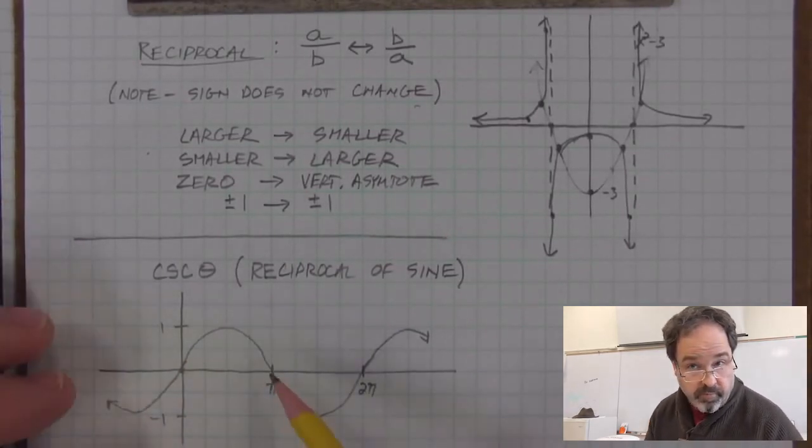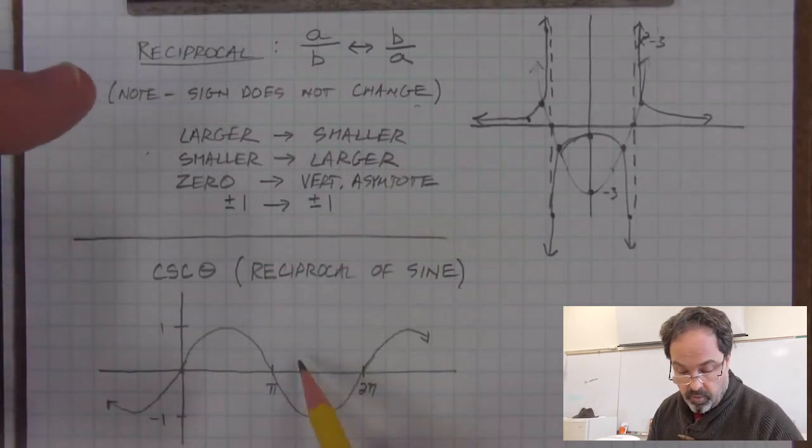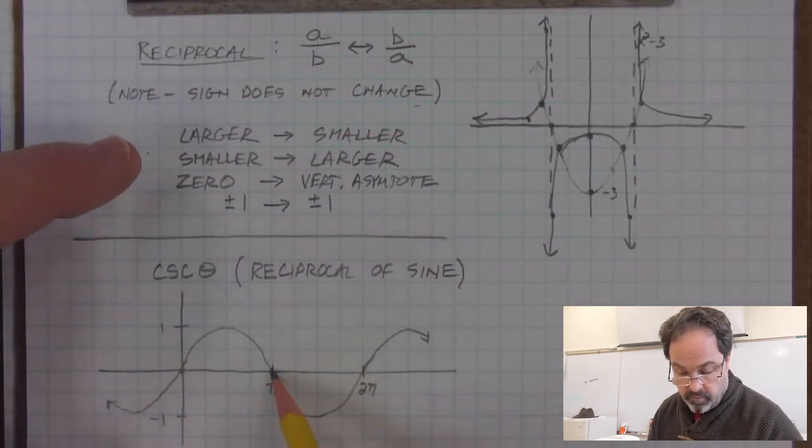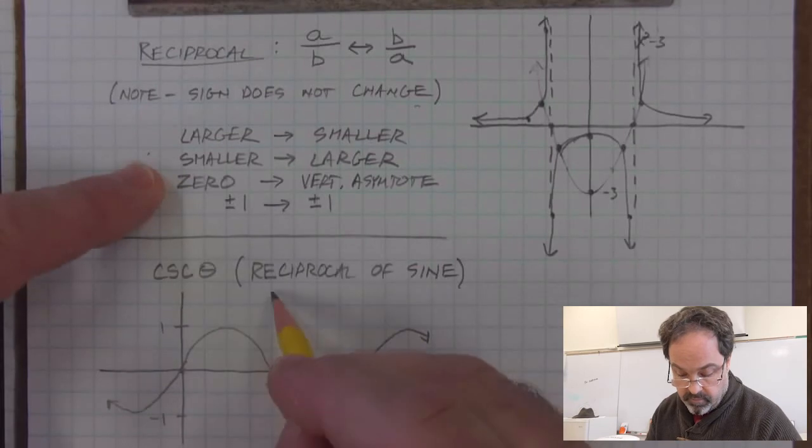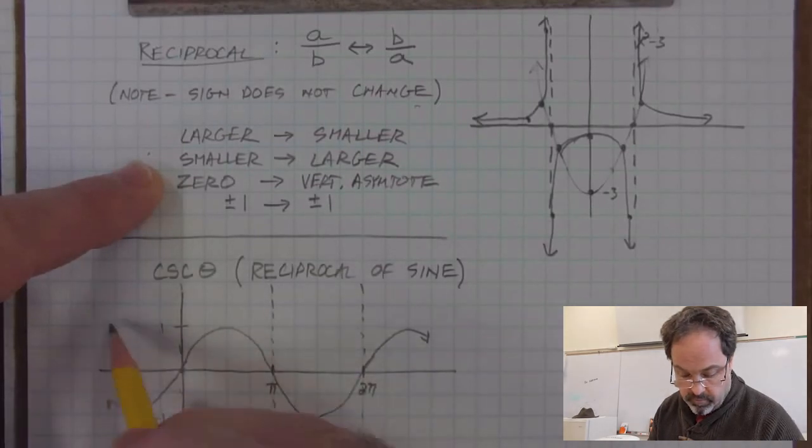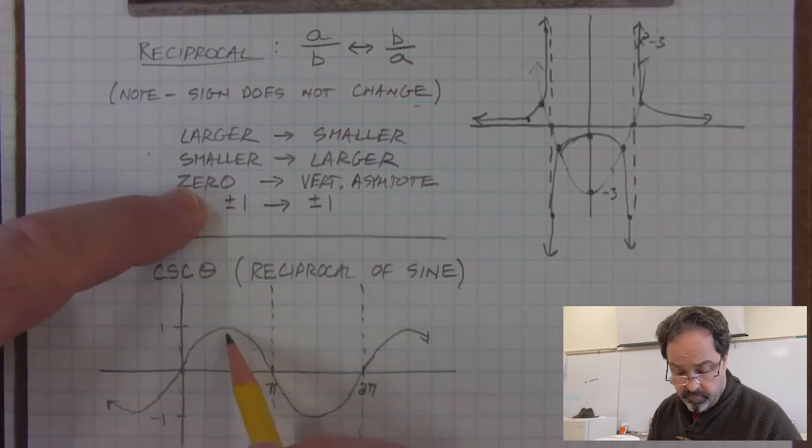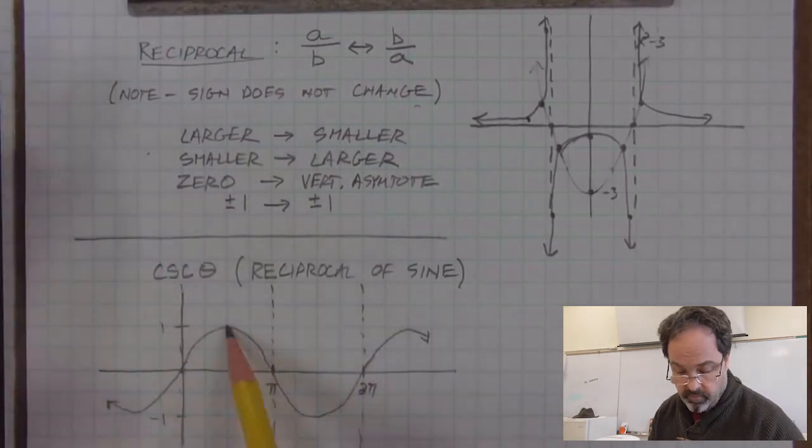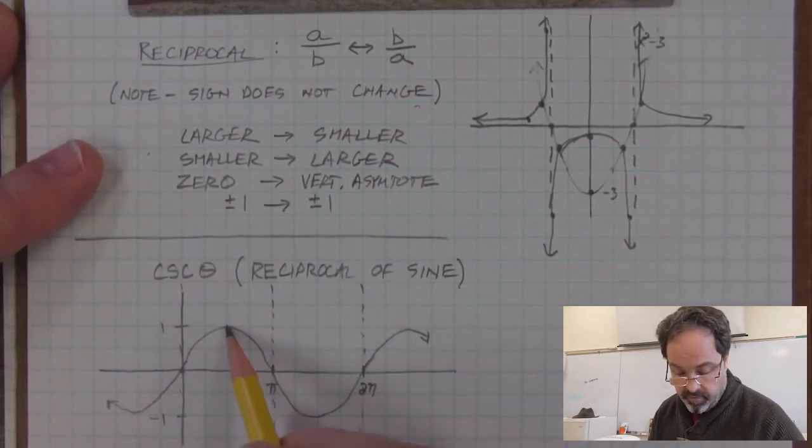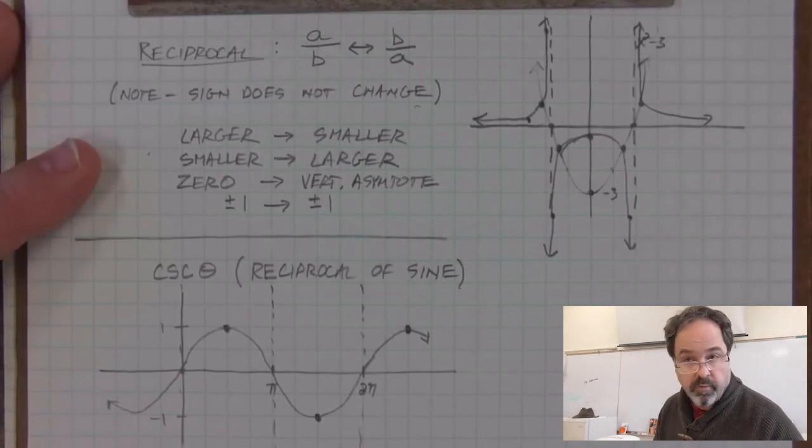Cosecant will be the reciprocal of this graph. So zeros are vertical asymptotes. The reciprocal of zero doesn't exist. That's where the graph will have vertical asymptotes. Ones are reciprocals of themselves. So here, the graph of sine has a value of 1, and that point will be on the graph of the reciprocal.